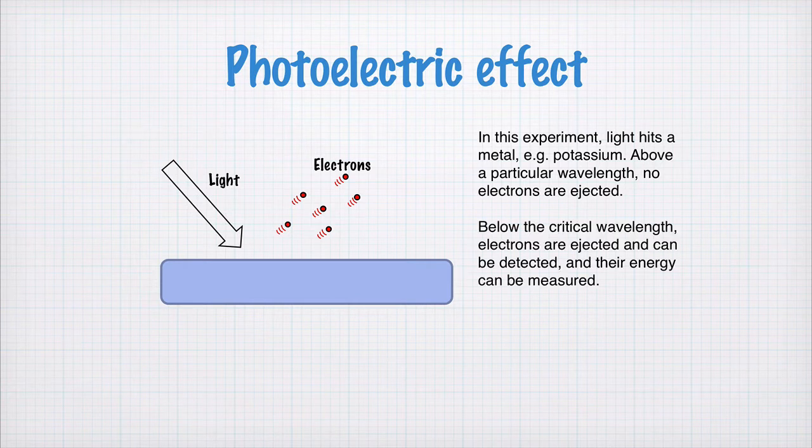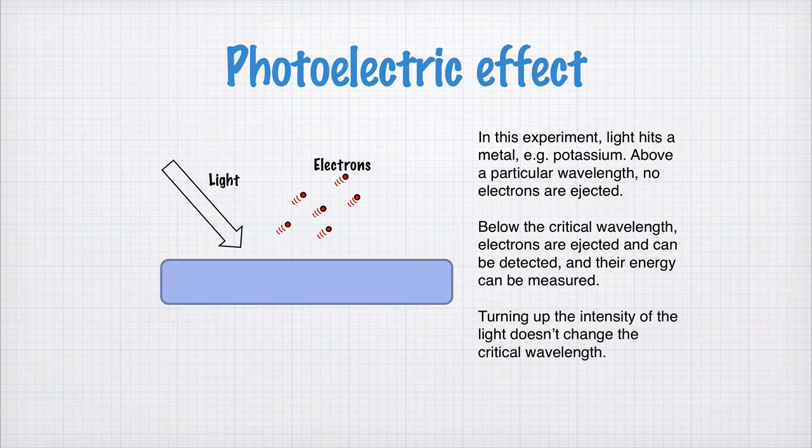So below this critical wavelength, electrons are ejected and can be detected and their energy can be measured. And importantly, turning up the intensity of the light does not change the critical wavelength. So it doesn't matter if you turn your light power up to gigawatts, there won't be any electrons ejected unless you hit a certain wavelength and your light is shorter than that wavelength.